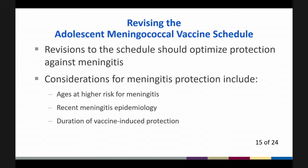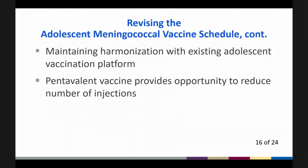Revisions to the adolescent meningococcal vaccine schedule should optimize protection against meningitis. Considerations to optimize meningitis protection include ages at higher risk for meningitis, recent epidemiology, and duration of vaccine-induced protection. Maintaining harmonization with the existing adolescent platform is an additional consideration, as is the use of pentavalent vaccines, which provide the opportunity to reduce the number of injections.